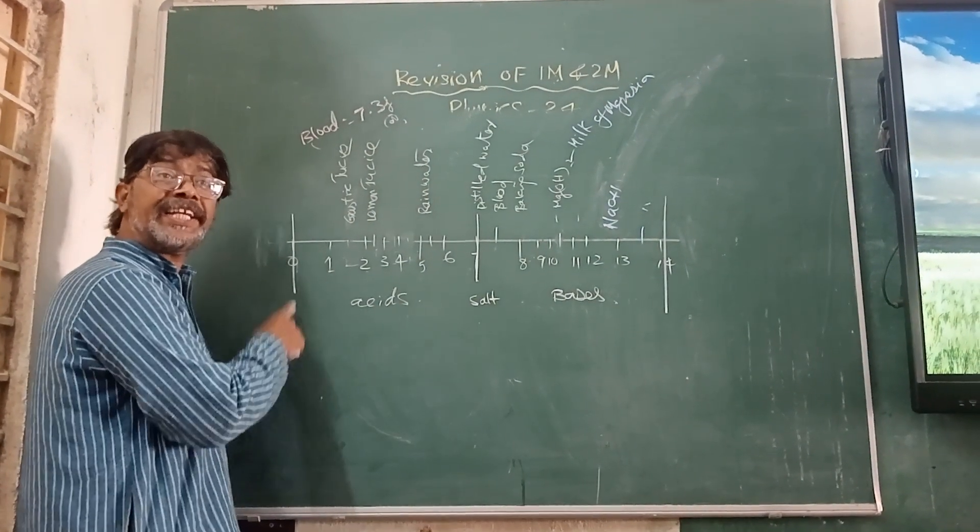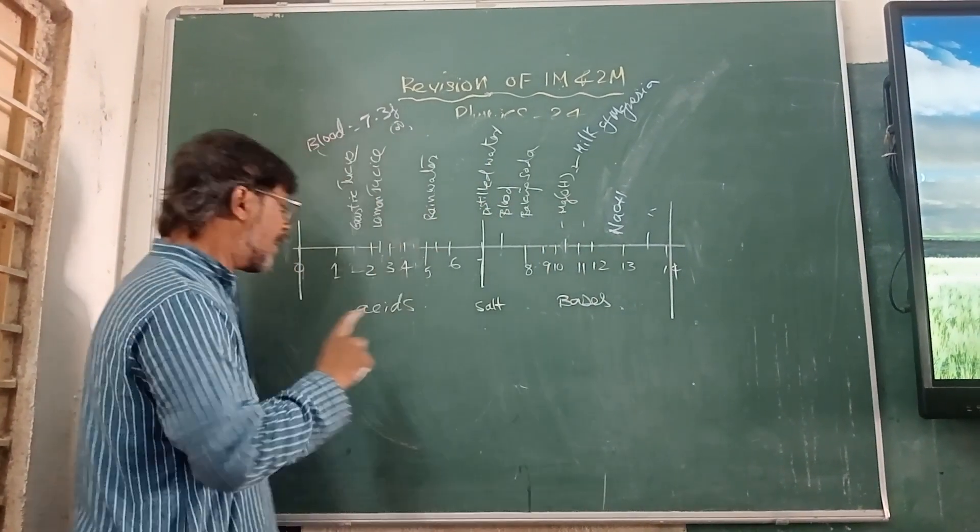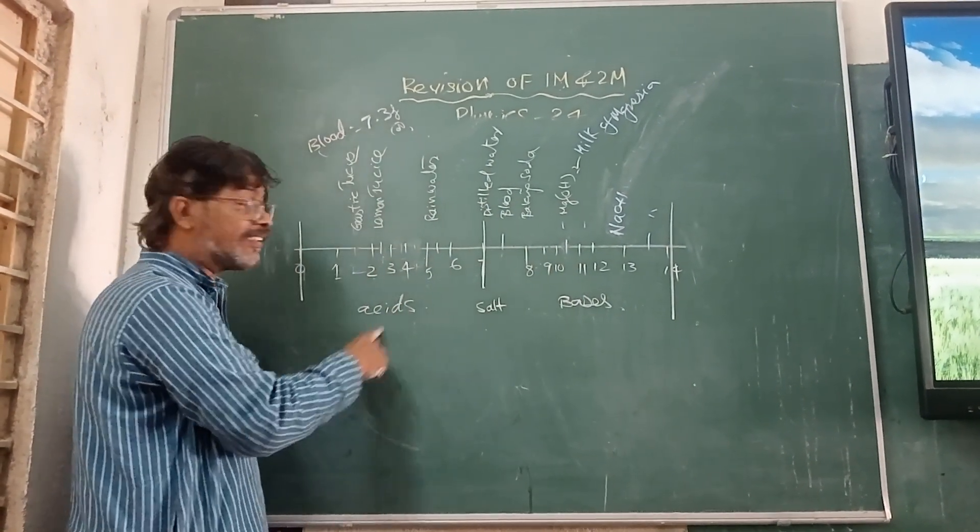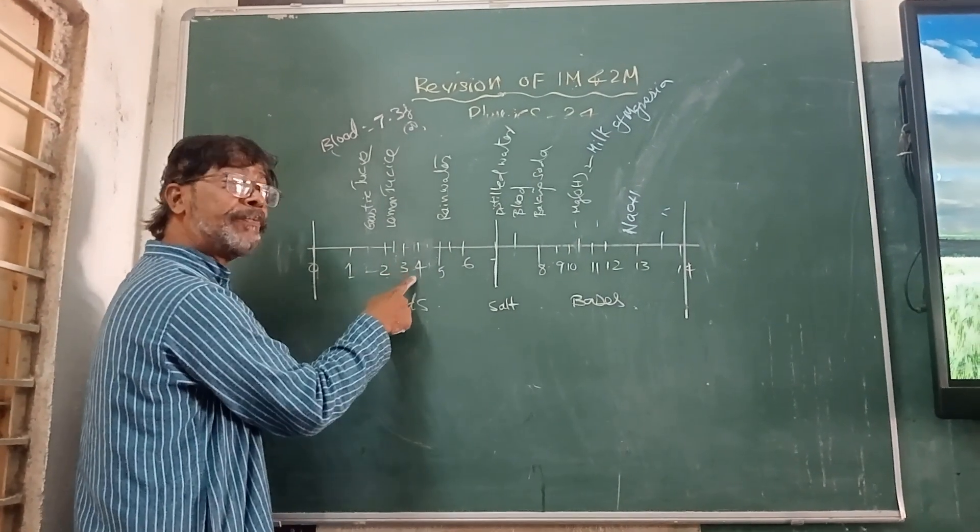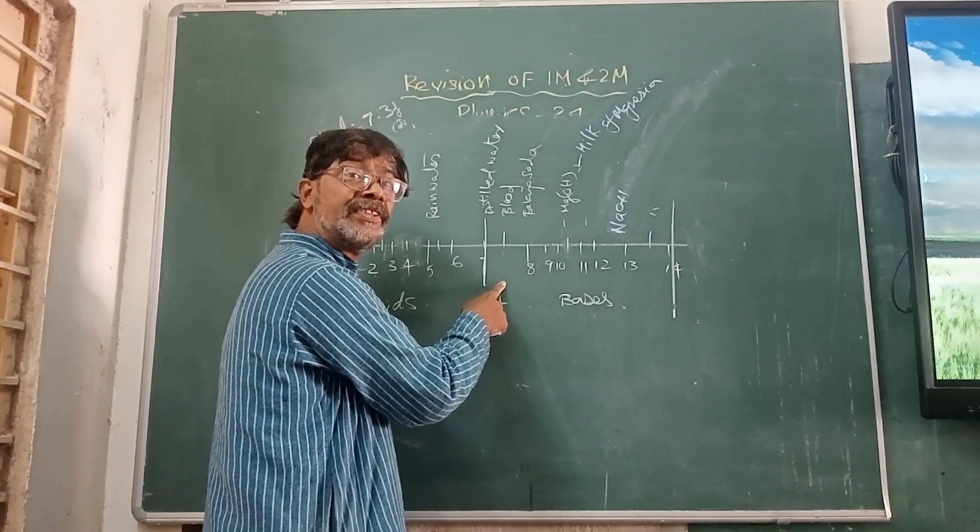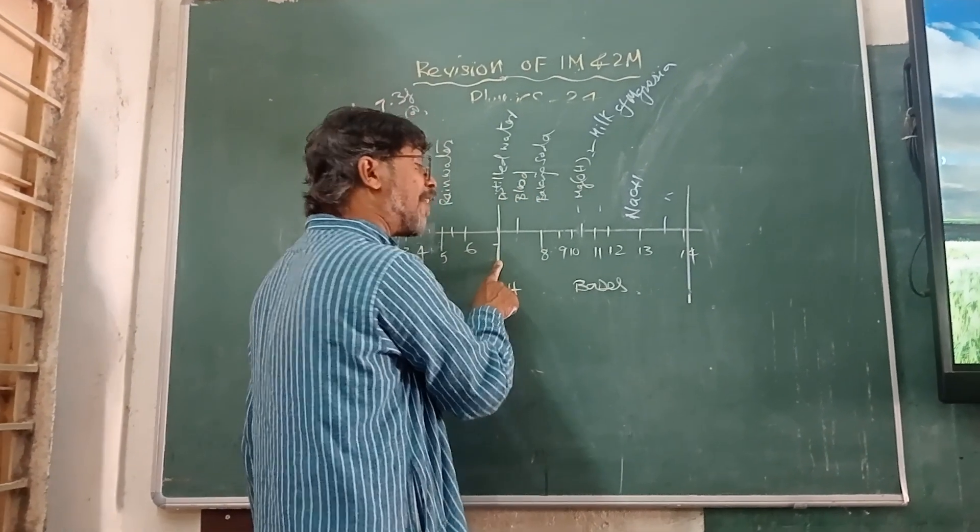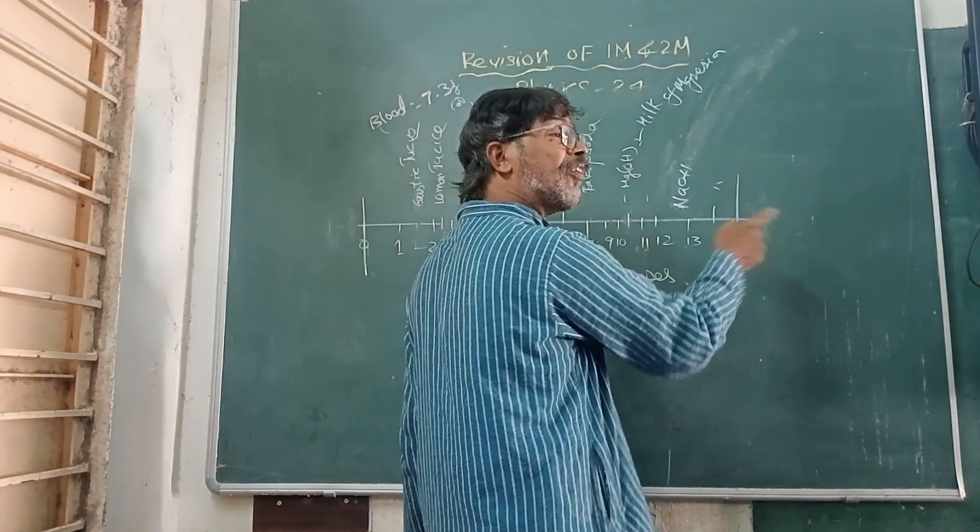Under pH scale, it is stored from 0 to 14. 0 to 7 are acids, 7 to 14 are bases. 0 to 3.5 are strong acids, 3.5 to 7 are weak acids, and 7 to 11 are weak bases, 11 to 14 are strong bases.